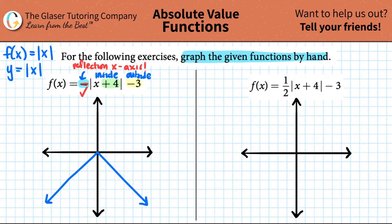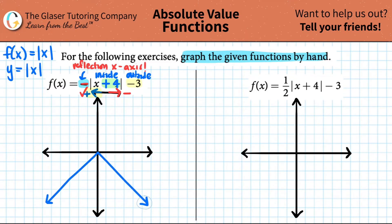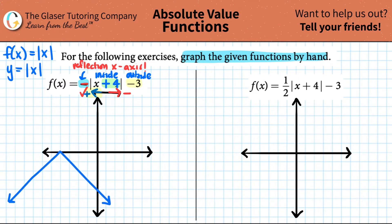Next, work on the inside function. Numbers plus or minus inside are always horizontal shifts. The rule of thumb: shifting right means a negative inside, shifting left means a positive inside. Here we have plus four, so we're shifting to the left four times. I take my graph and move it to the left: one, two, three, four. That shift is done.